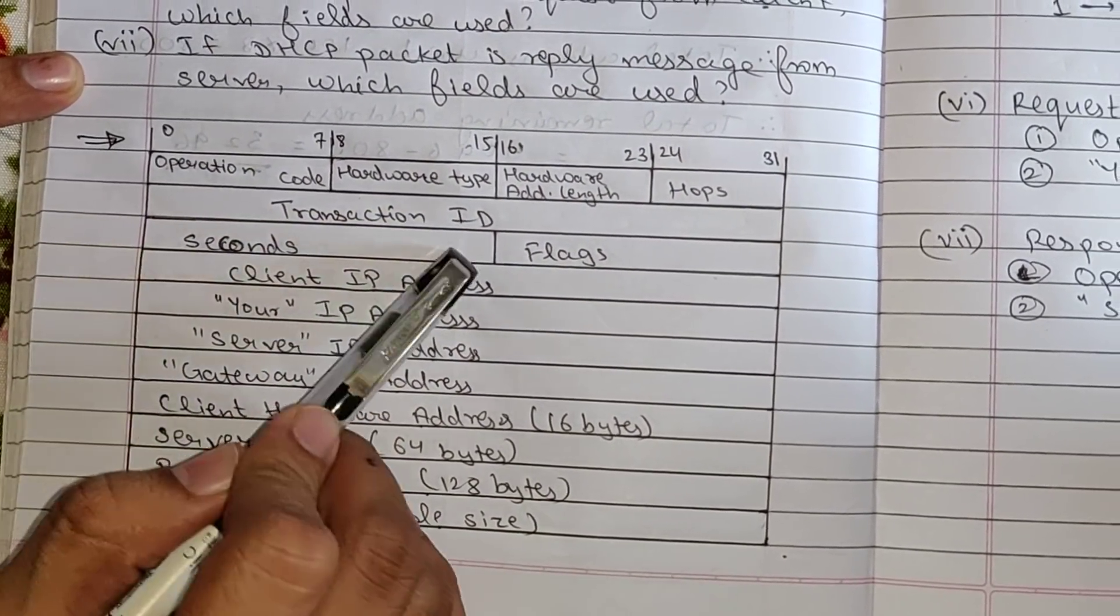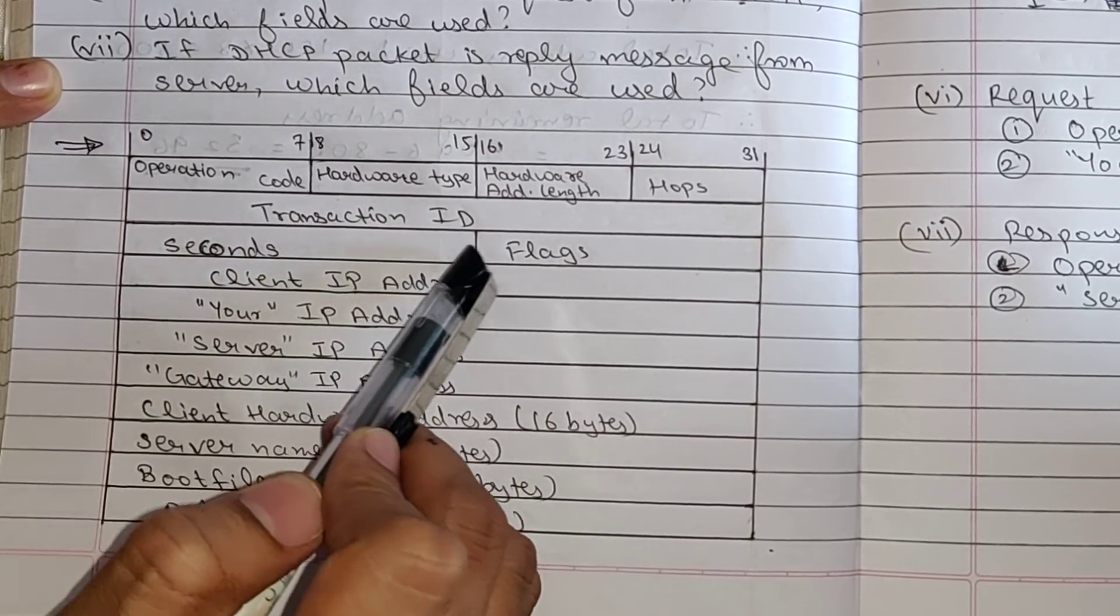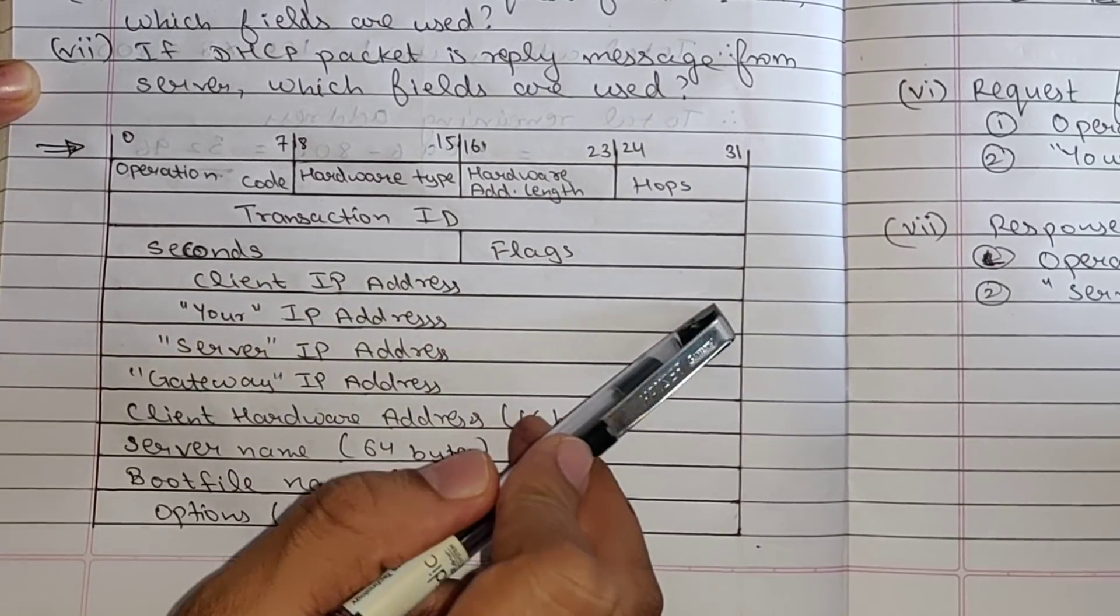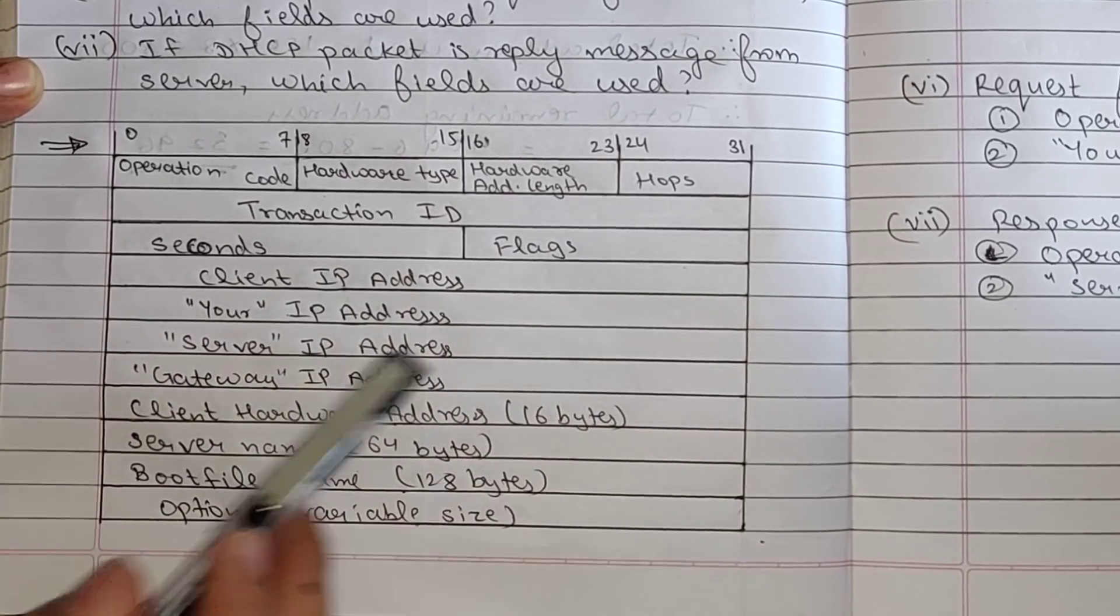Next from 0 to 31, that is 32 bits, is transaction ID. 0 to 15 is seconds and 16 to 31 is flags. Next we have client IP address full length, your IP address full length, server IP address full length.